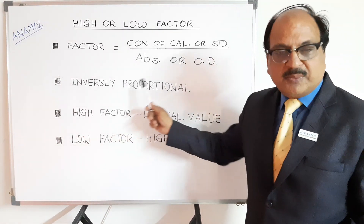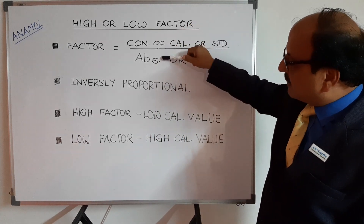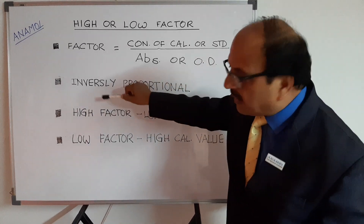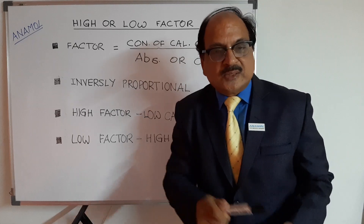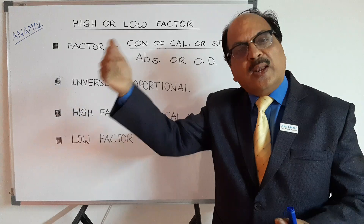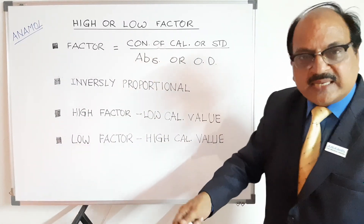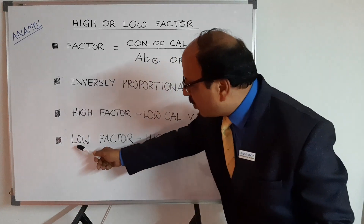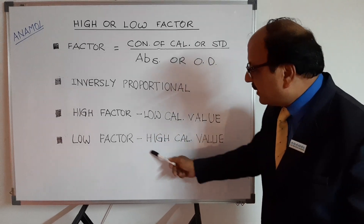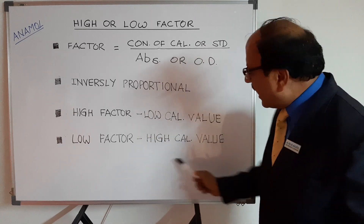There is a relationship which is totally inverse. Concentration of calibrator is low, hence the absorbance is low. The low calibrator value means high factor. High factor means high results. So your high results are actually related to a low value in your calibrator. And vice versa — exactly the same: if a low factor is there, it is actually indicating a high value of your calibrator. Now, you must wonder how you can get a low calibrator value or a high calibrator value.